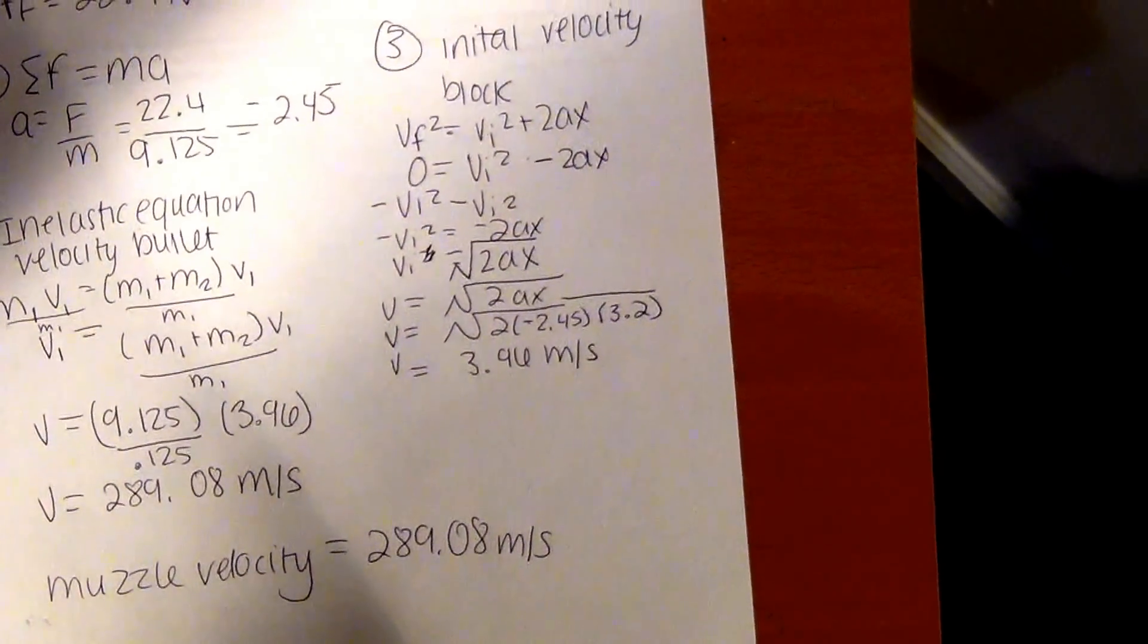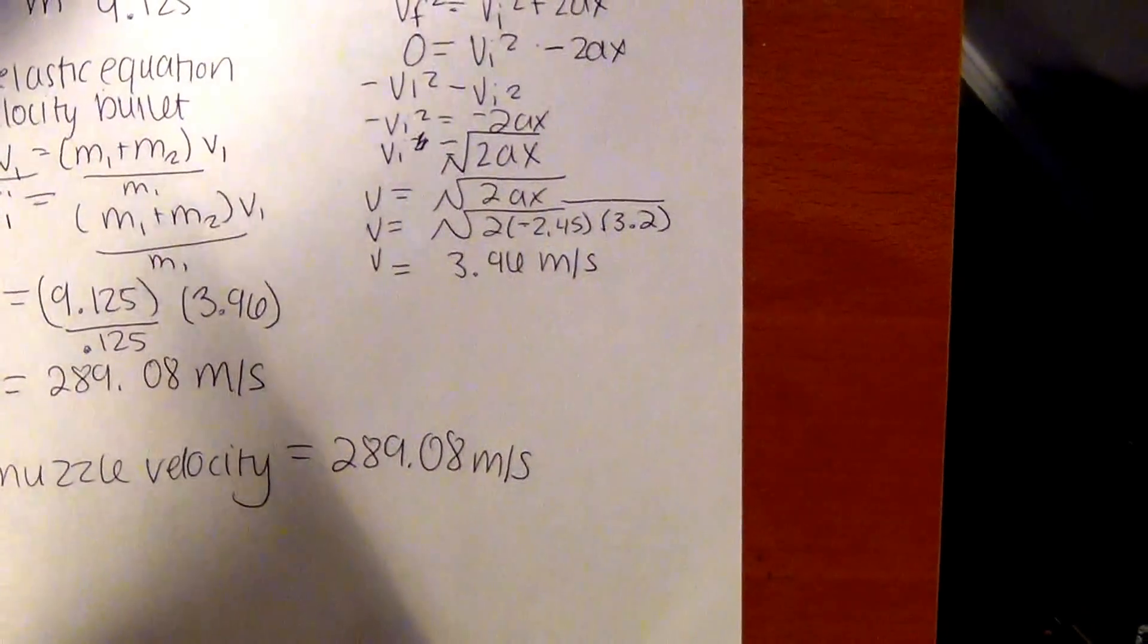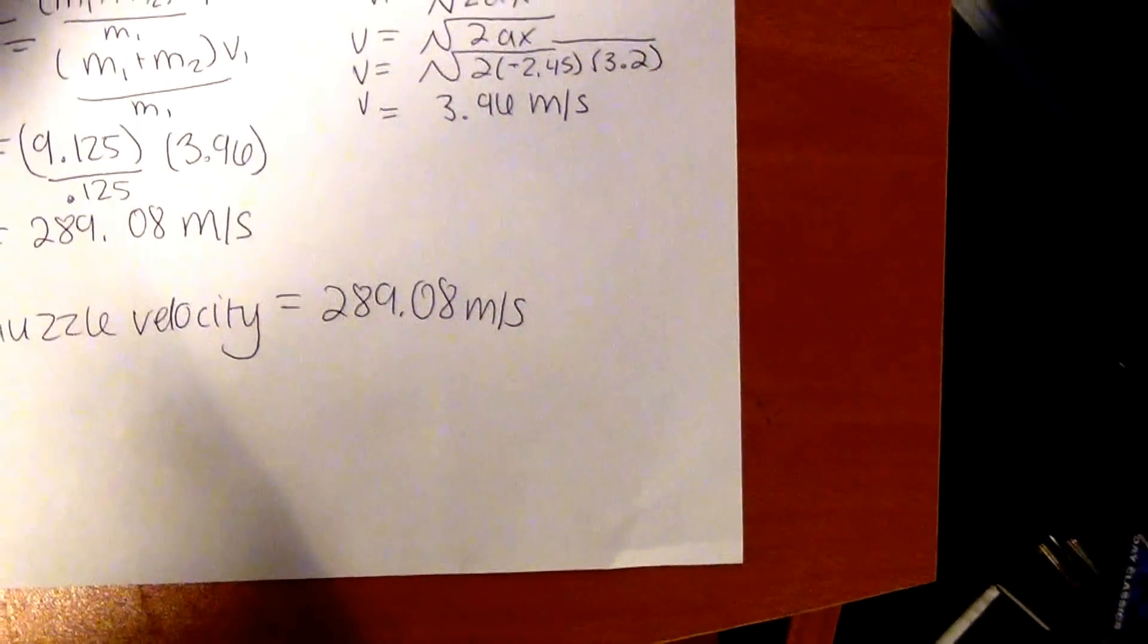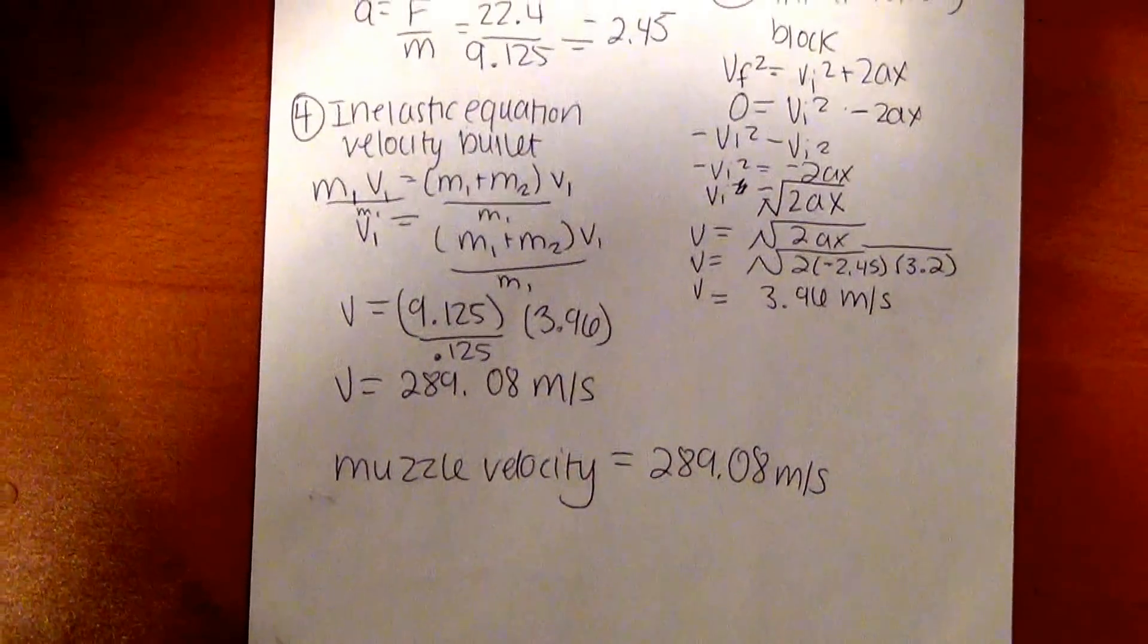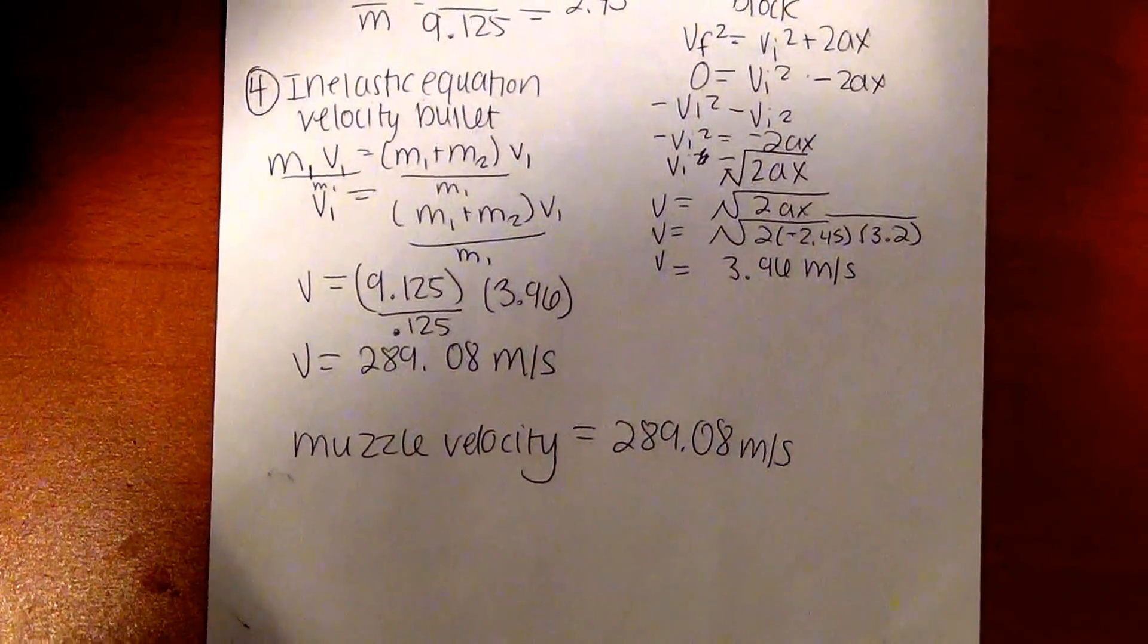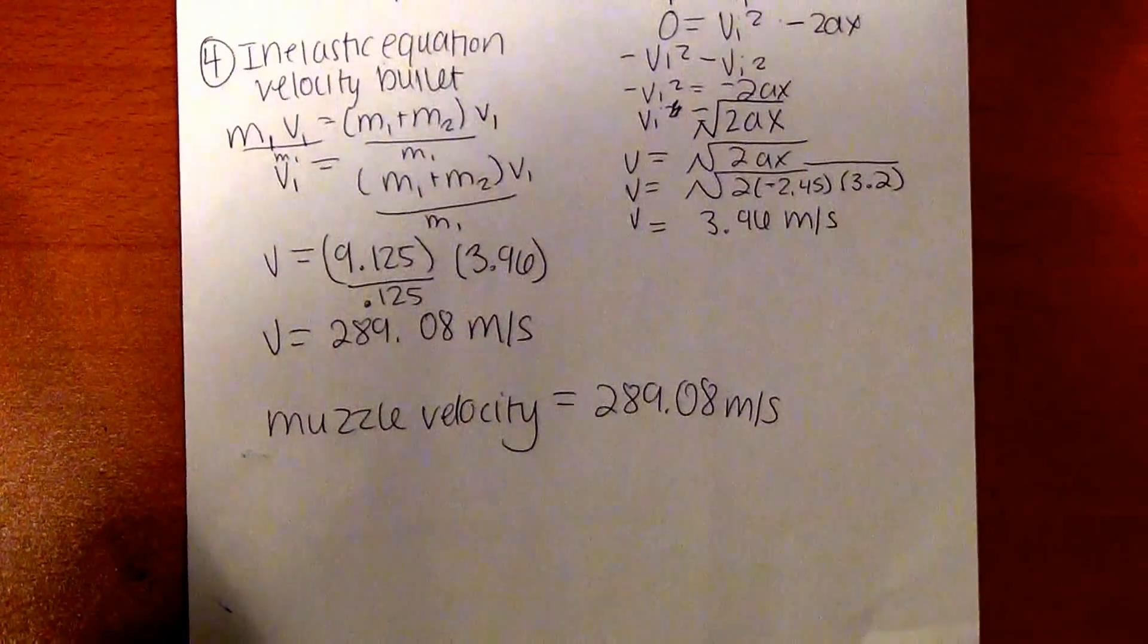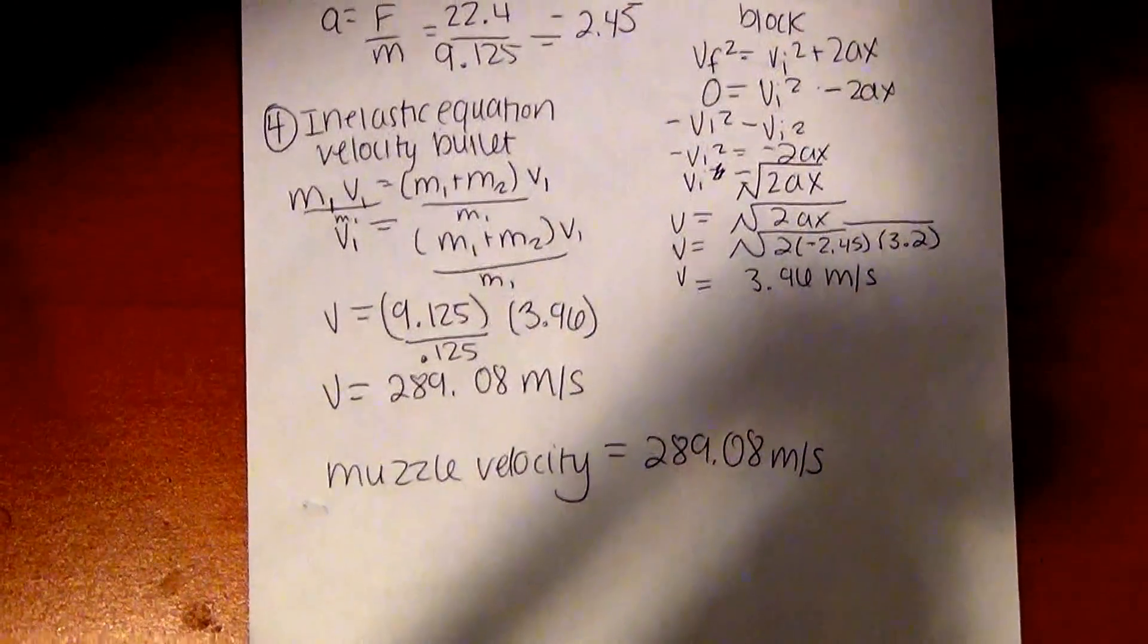After you have that, you want to find the initial velocity for the block. You want to use the formula Vf squared equals Vi squared plus 2AX and solve for V, and you will get 3.96 meters per second. Finally, you want to use the inelastic equation and isolate V by itself. Once you isolate V in the formula, you should get the muzzle velocity to equal 289.08 meters per second. Thank you.